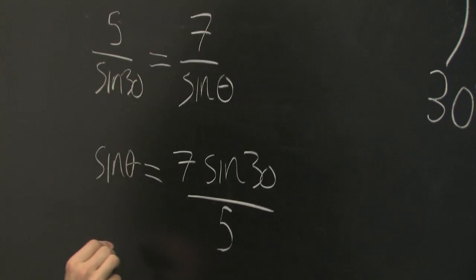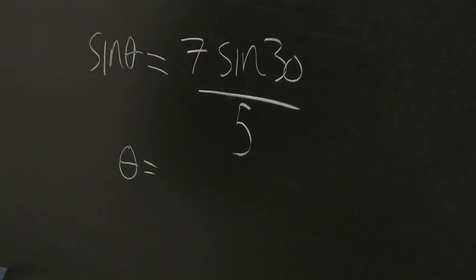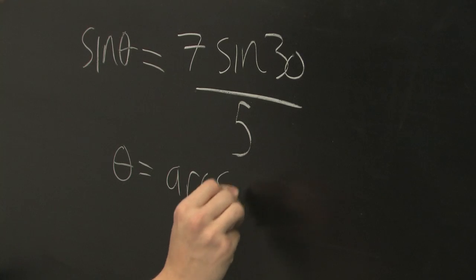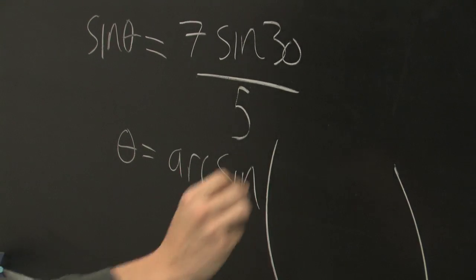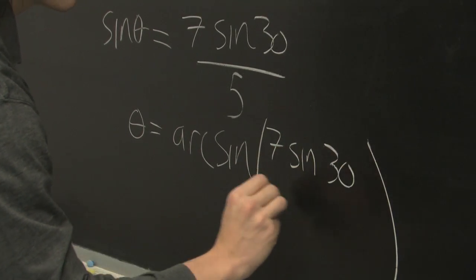And from here, we can take the inverse sine of both sides, also sometimes referred to as the arc sine. We'll use that notation to avoid ambiguity. Arc sine of 7 sine 30 over 5.